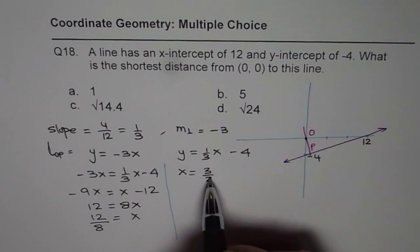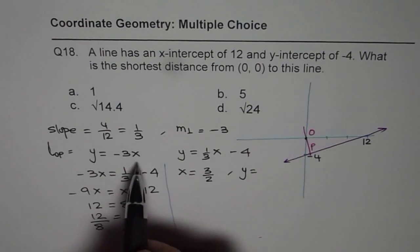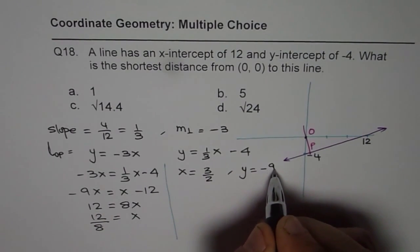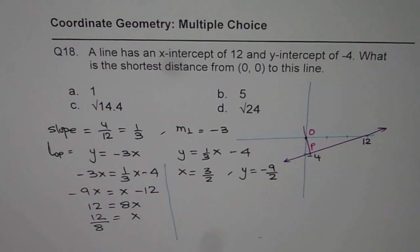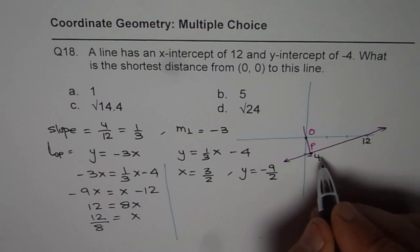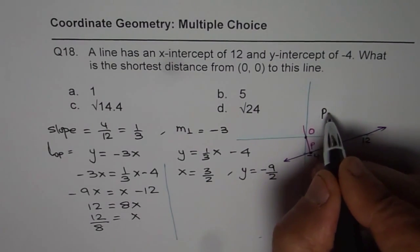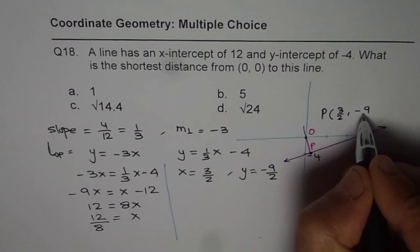So if x is 3 over 2, then the y value should be minus 3 times x, which is minus 9 over 2. So that is the coordinate point for P. So we get point P, which is 3 over 2, minus 9 over 2.